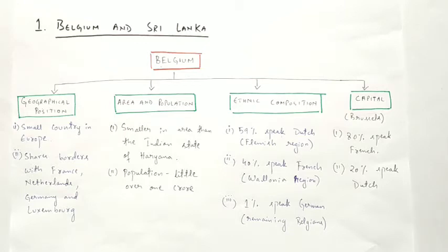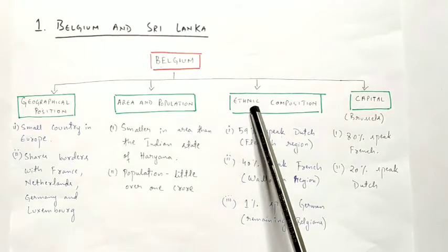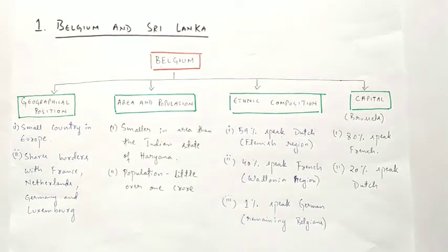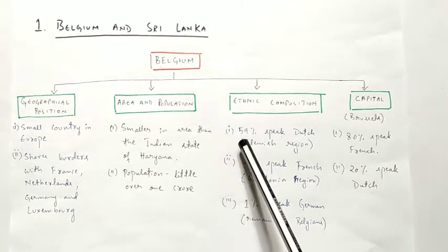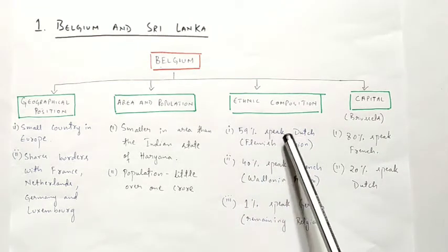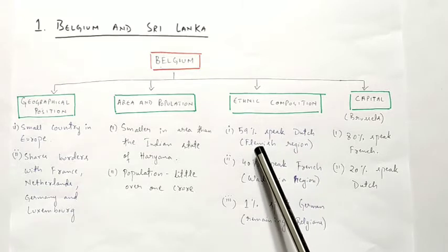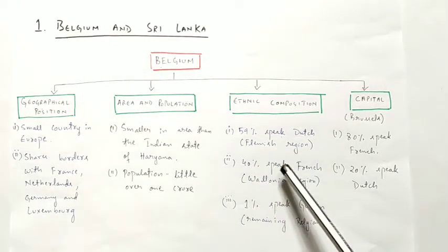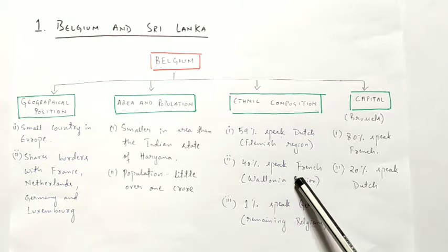The population is a little over one crore. Being a small country, it has a large population, making it the 22nd most densely populated country in the world and the sixth most densely populated in Europe. Now, this is the ethnic composition of Belgium. 'Ethnic' means a social division based on shared culture — people belonging to a particular cultural group. Here, 59 percent of people speak Dutch, those staying in the Flemish region.